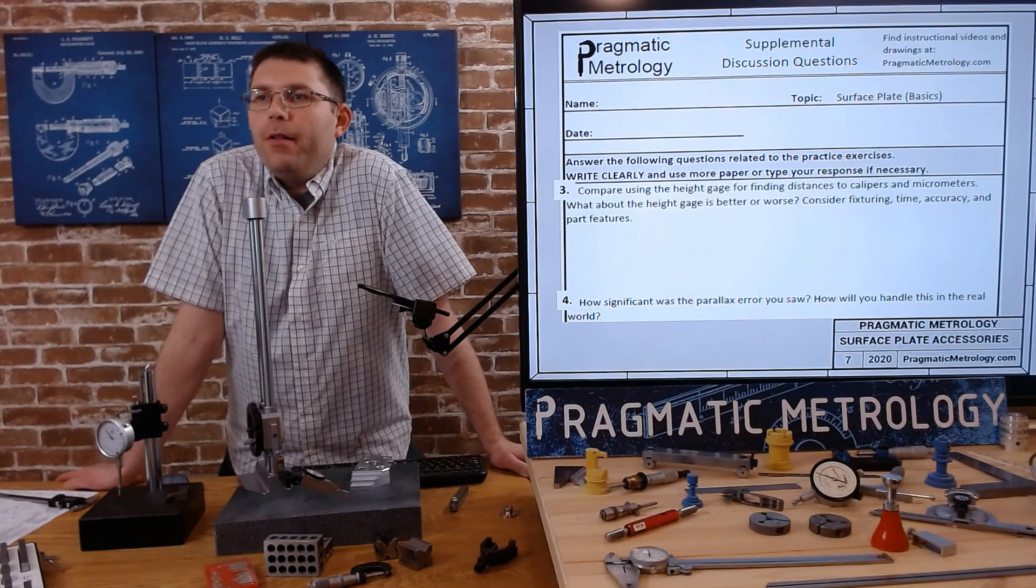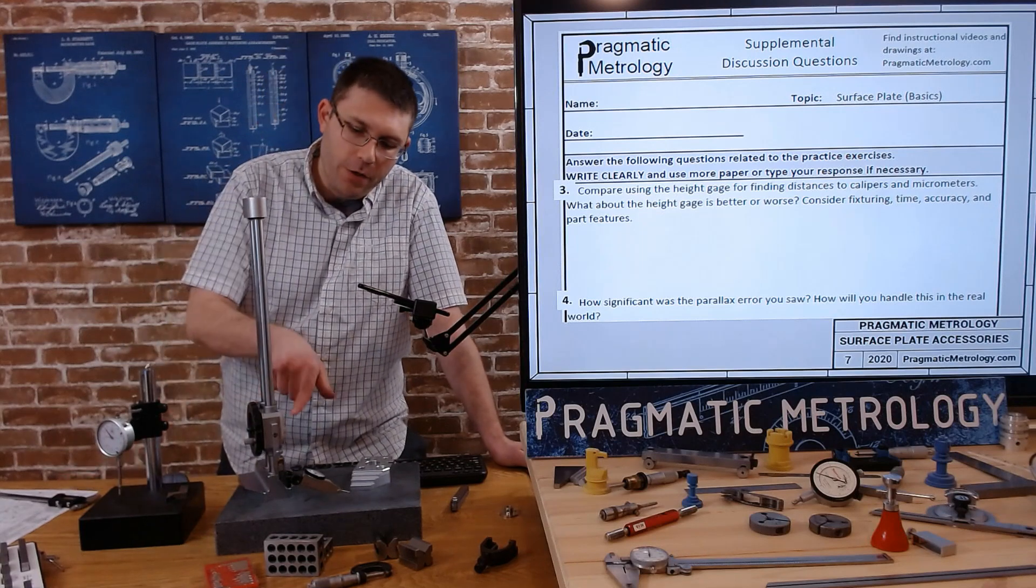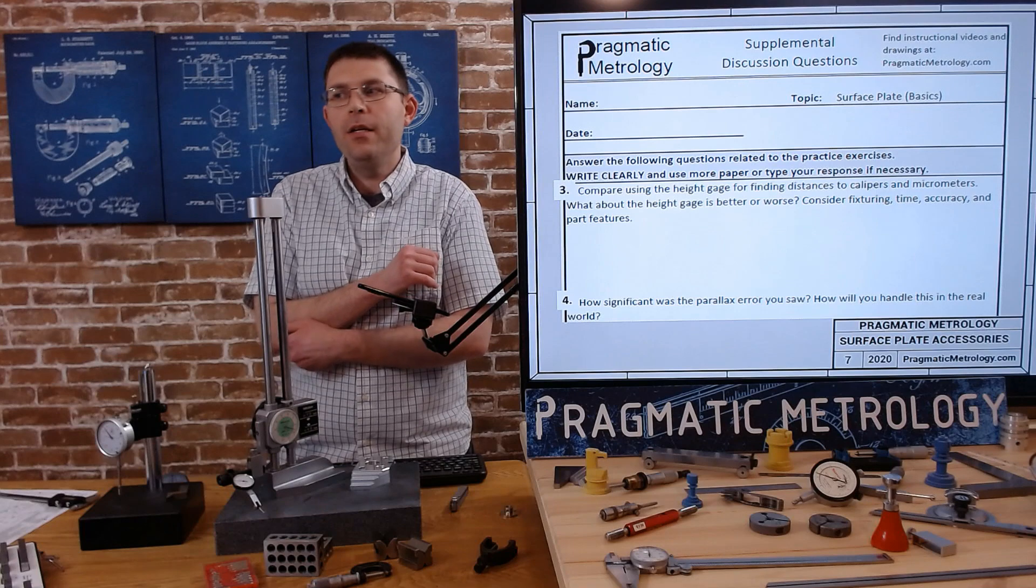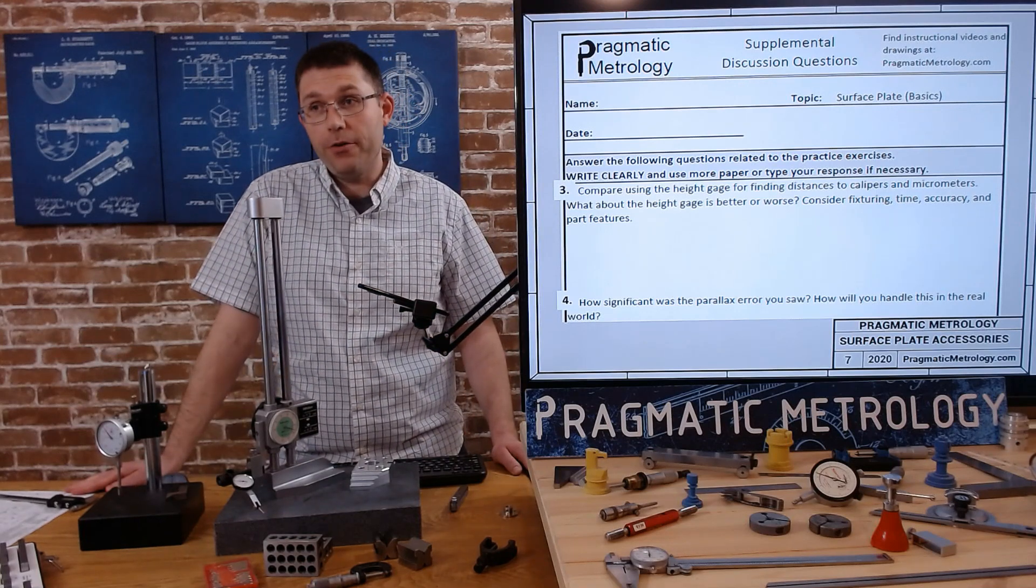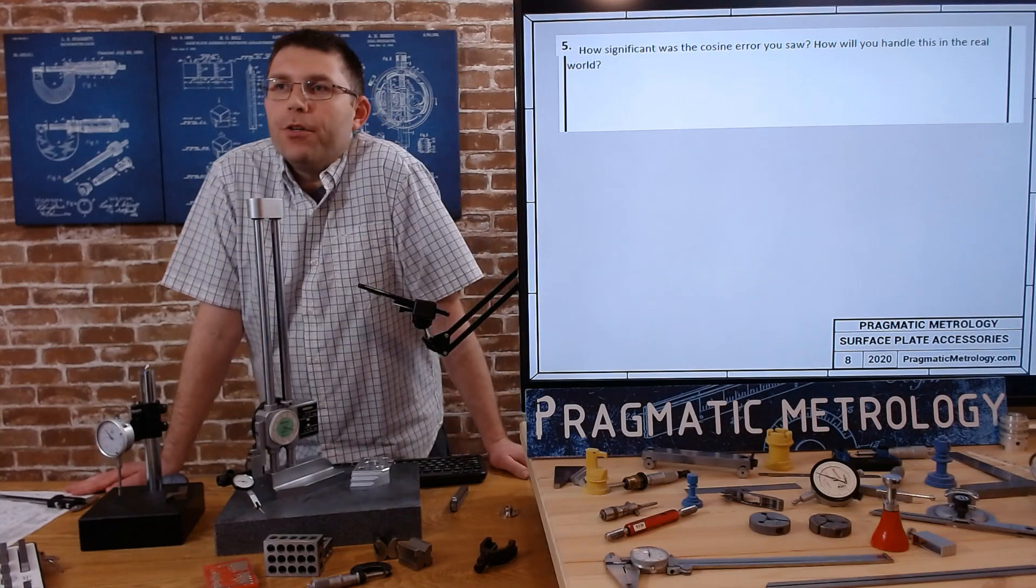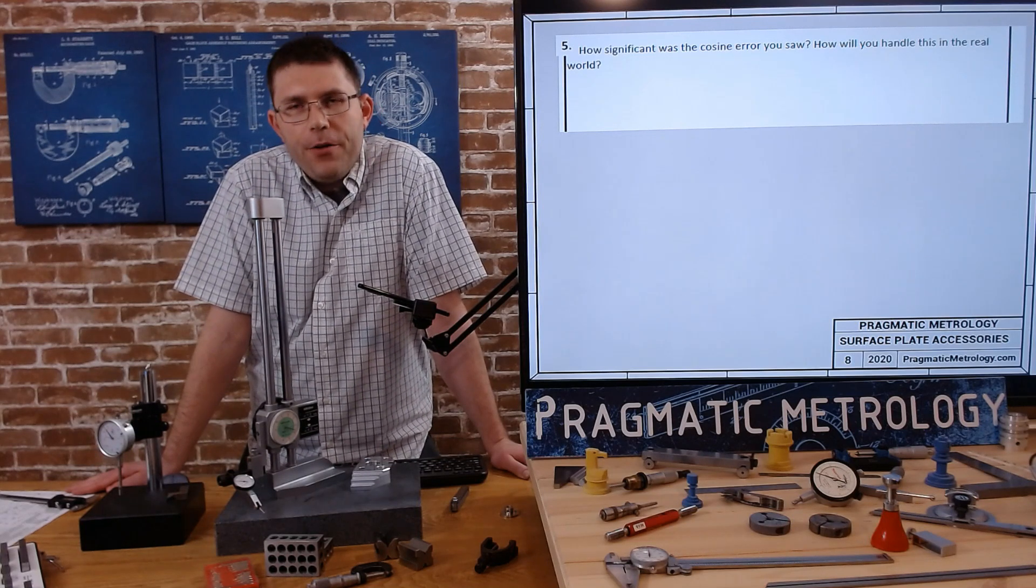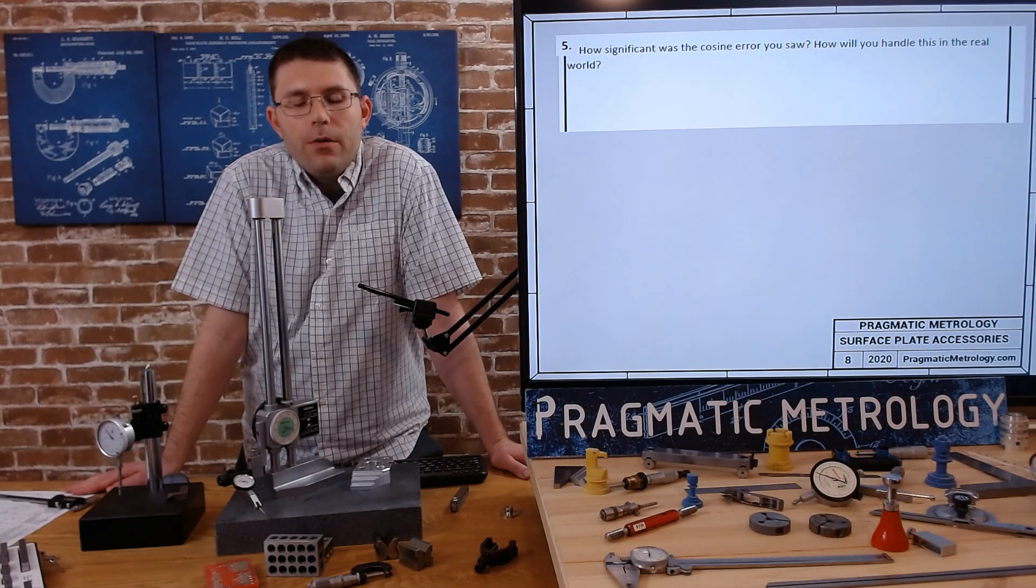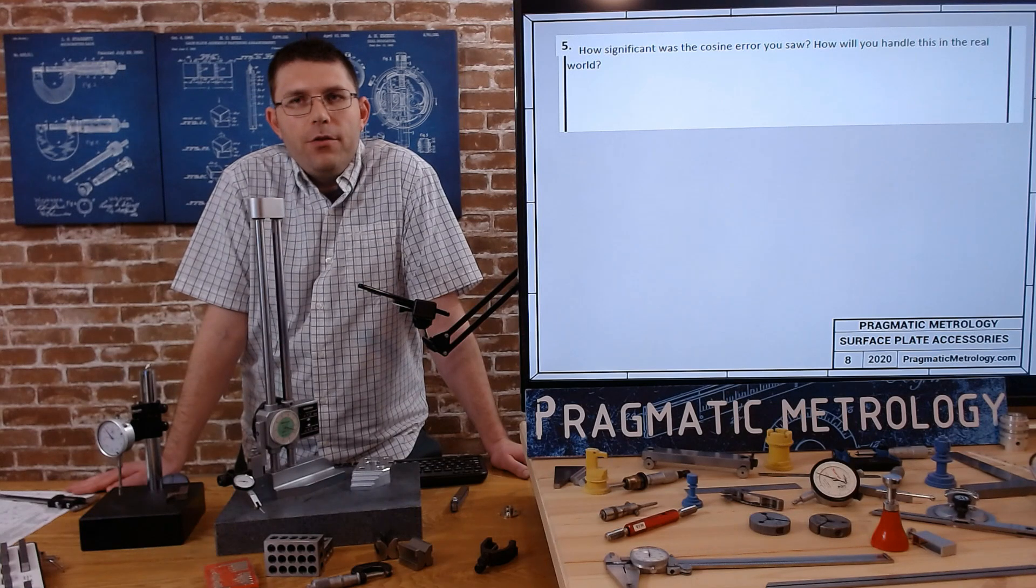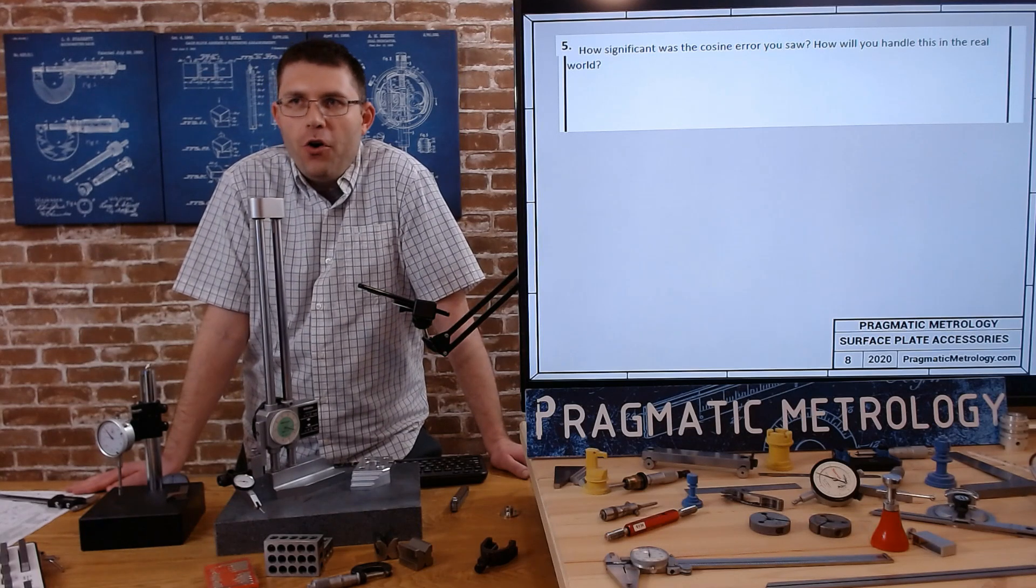Number four, how significant was the parallax error you saw? How will you handle this in the real world? So I mentioned I had about a thousandth of parallax error depending on where I looked at our height gauge. That's why I was always crouching down and looking at it. So it is significant. It's about a thousandth or two thousandths at worst probably, but in a lot of precision manufacturing that's your entire tolerance zone. So I would say just try to look dead straight on. And five, how significant was the cosine error you saw and how you handled this in the real world? So the cosine error again was significant. It was like two and a half thousandths at the bad angle. And again, sometimes that's all your tolerance zone. So I just, as I'm trying to repeat it as much as I can, keep it at about five to 10 degrees and you really shouldn't have too many problems. So I know I've repeated certain things a bunch of times that I want to really hammer it home, especially with these five questions. They're what you should be thinking about anytime you're using the height gauge, avoiding cosine error, avoiding parallax error, setting it up as efficiently as you can.